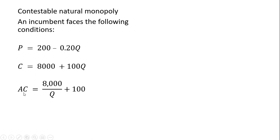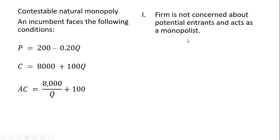From this cost structure, we can calculate average cost, the cost per unit, by dividing C by Q. If the firm is not concerned about potential entrants and acts as a monopolist, it's going to produce where marginal revenue equals marginal cost.